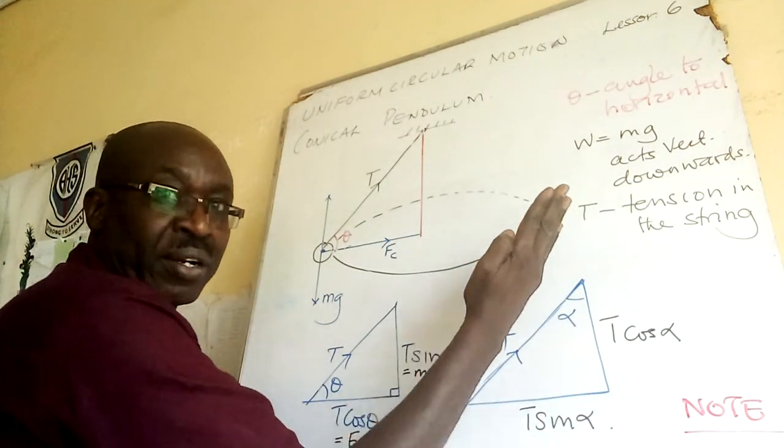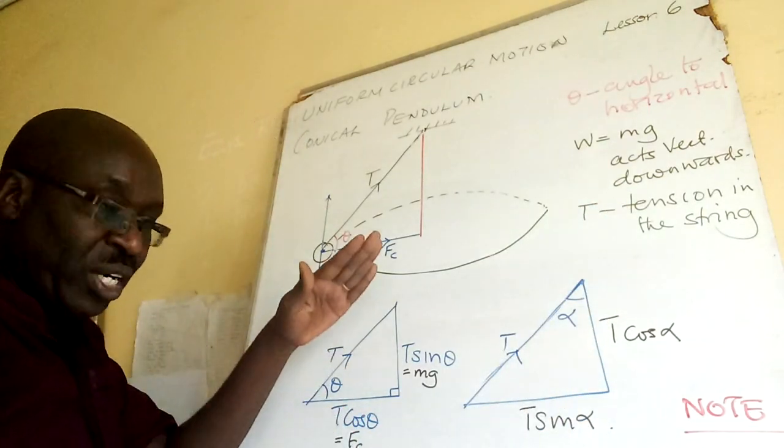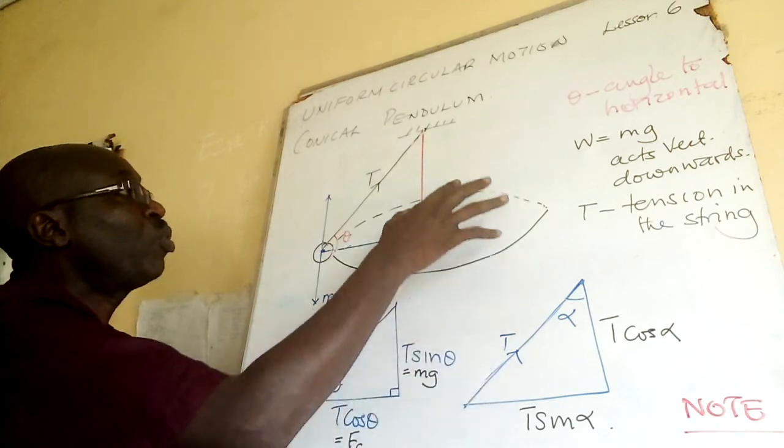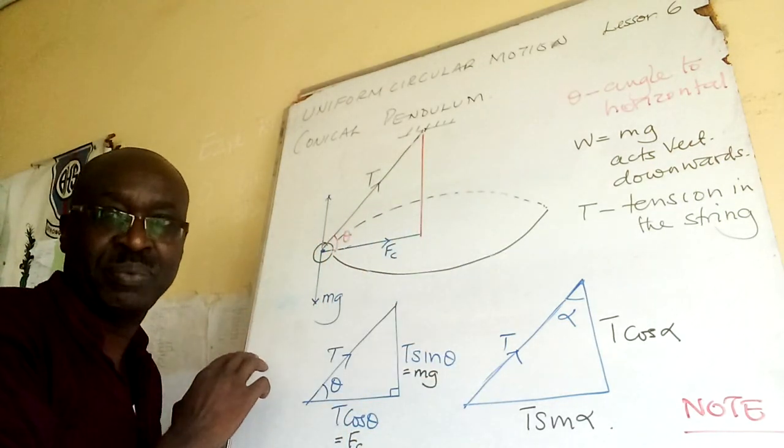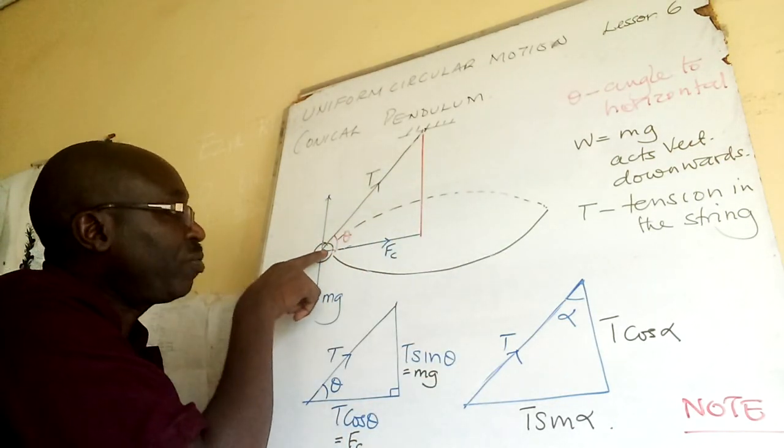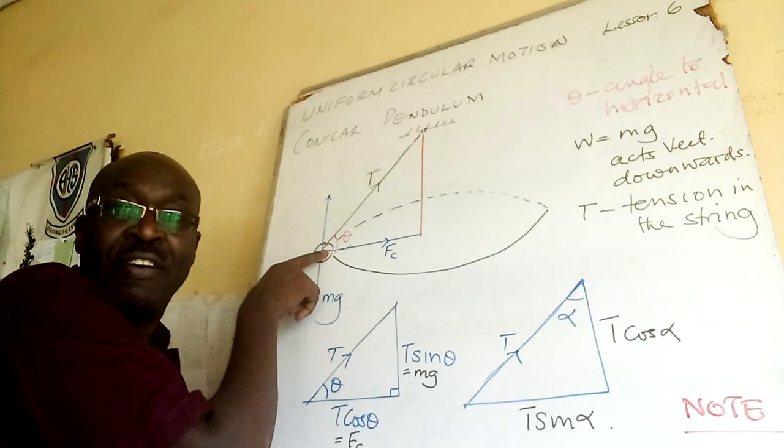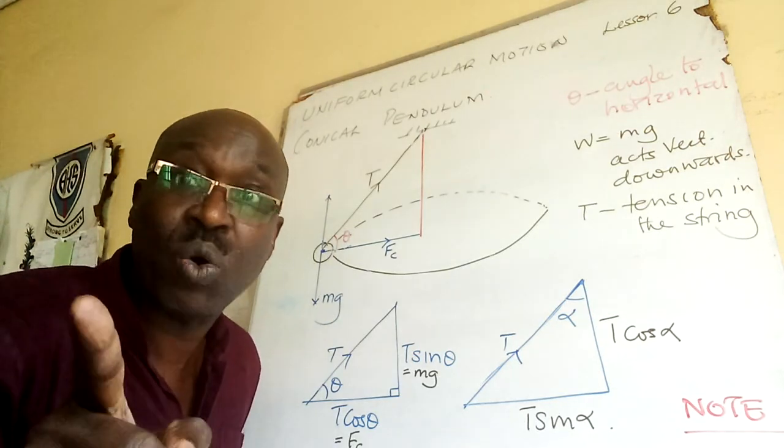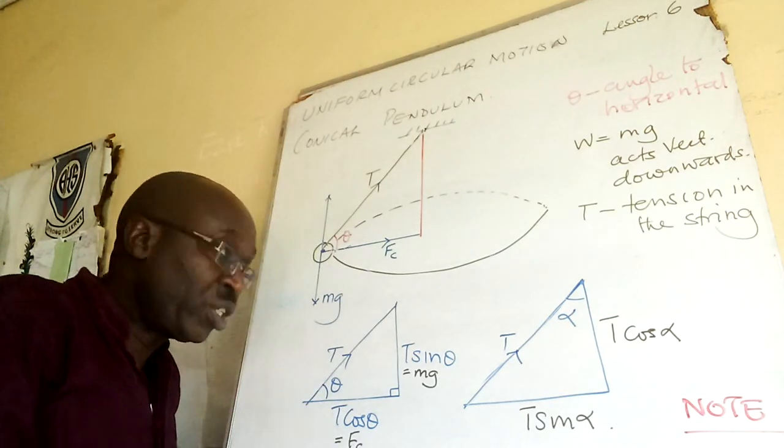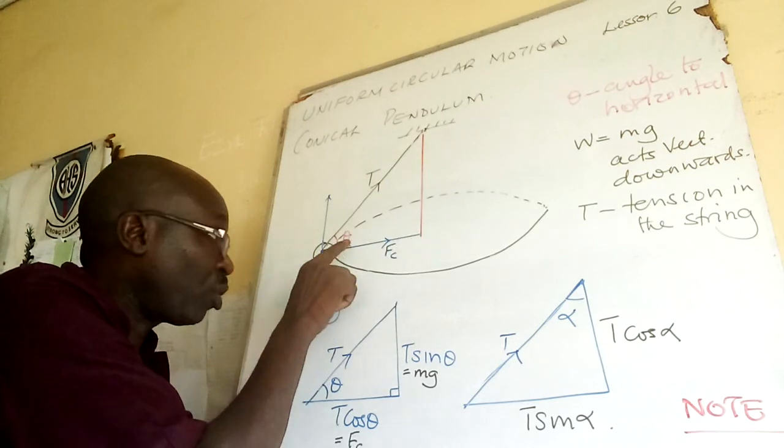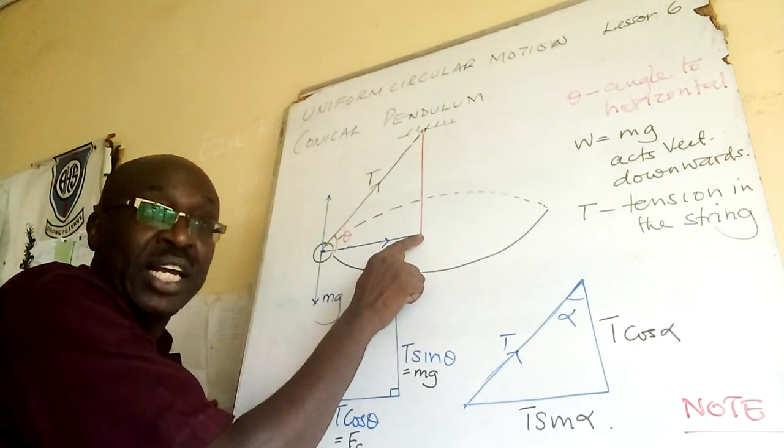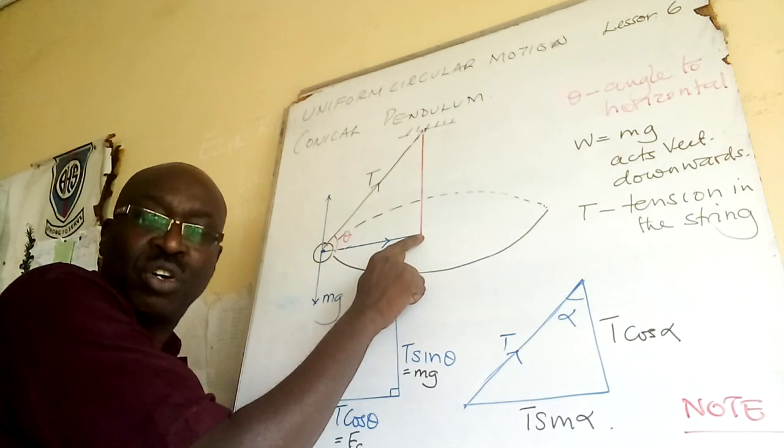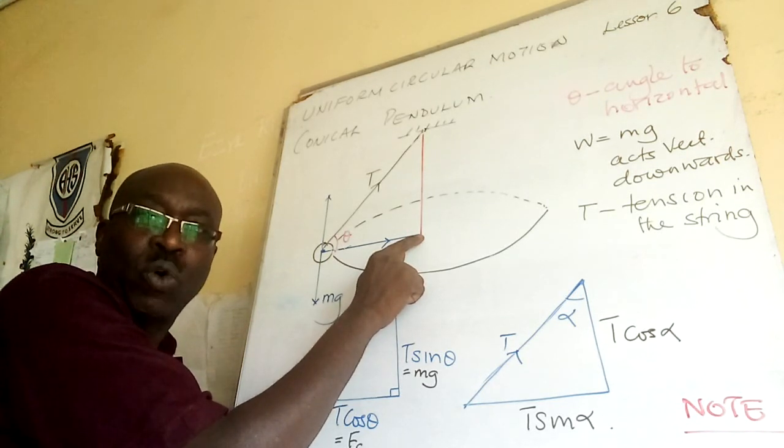We want to analyze here centripetal force. Centripetal force is the force that is directed towards the center of a circle. So this is our center of the circle. If I draw a line here it will represent the magnitude of horizontal force which is centripetal force.